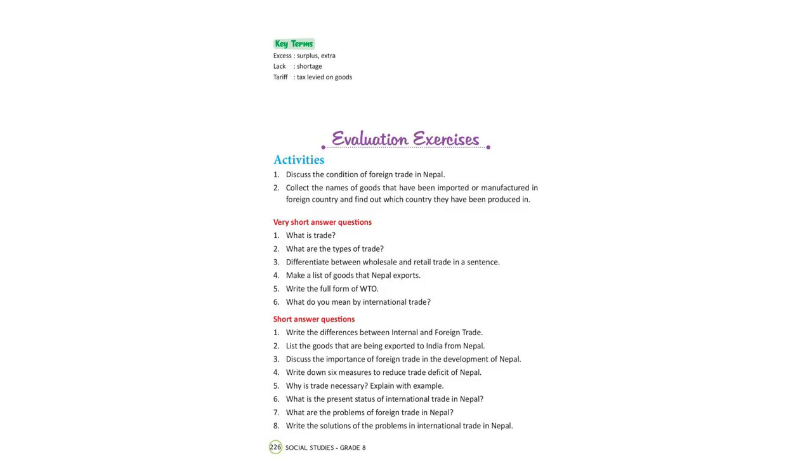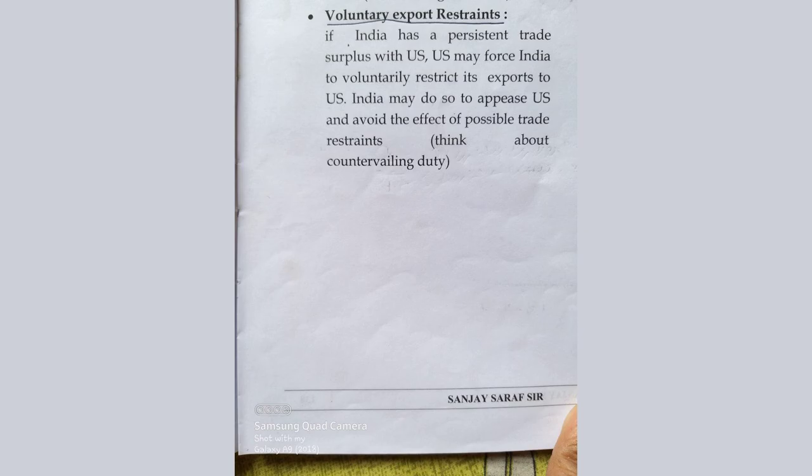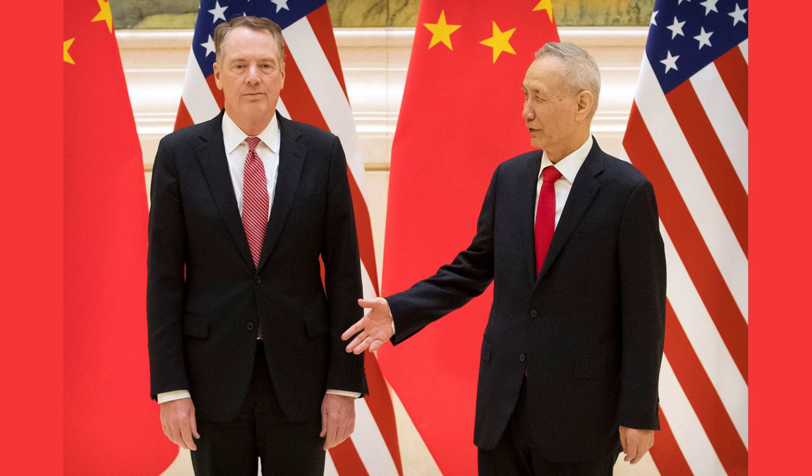This trade surplus was seen by many in the US as evidence of unfair trade practices, such as currency manipulation and non-tariff barriers. In response to these concerns, the US government implemented various measures to address the trade imbalance. In the 1980s, the Reagan administration imposed voluntary export restraints on Japanese automobiles, limiting the number of cars that Japan could export to the US, aimed at protecting the struggling American auto industry.